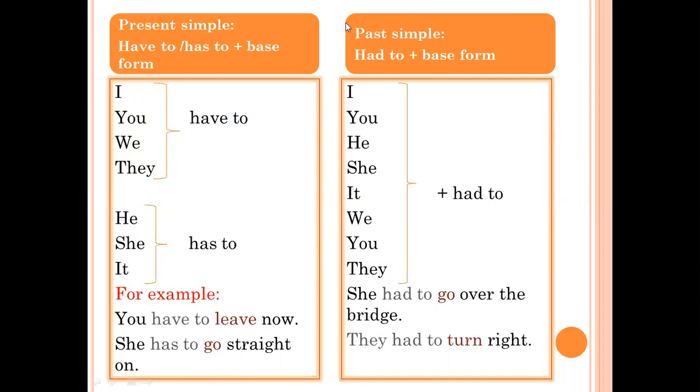For example, she had to go over the bridge. So after had to, also the verb comes in the base form. They had to turn right. After had to, the verb turn comes in the base form.